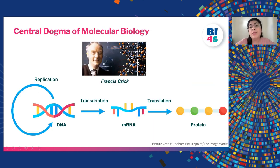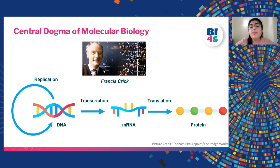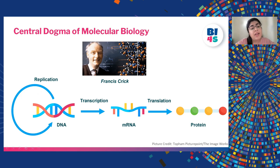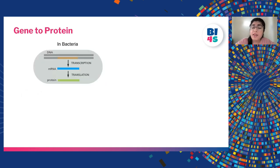Having understood replication, our main aim is to understand how a gene expresses. The principle underlying this is known as the central dogma, given by Francis Crick. It states that information flows only in one direction: DNA can synthesize DNA through replication, then it can transcribe into mRNA, and further the RNA can be translated into protein — and it is the protein which does all the work.